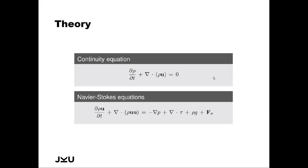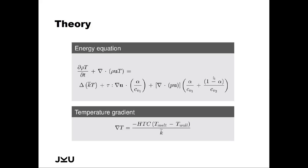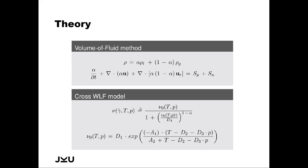I would like to show the equations that are implemented. The process is highly compressible, so we use the compressible form of the continuity and the Navier-Stokes equations. We also use a certain energy equation where shear heating is very important for polymeric materials. You cannot assume a constant temperature on the walls of the mold itself — you have to calculate a certain heat flux from the melt into the walls, which has both a spatial distribution and a temporal evolution.